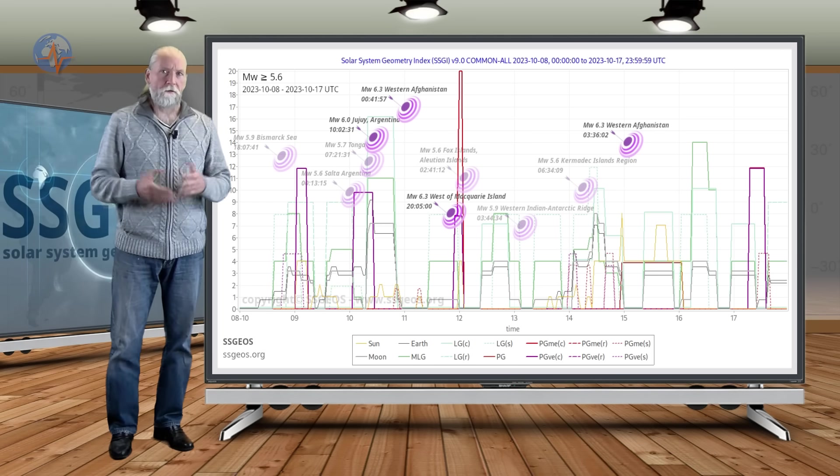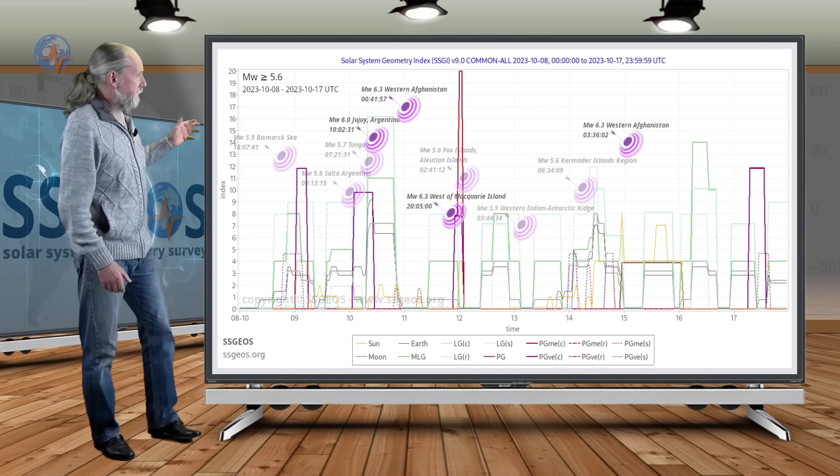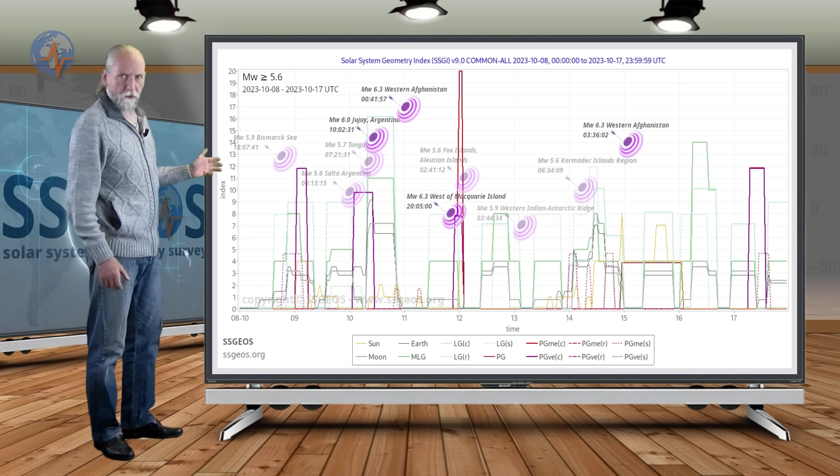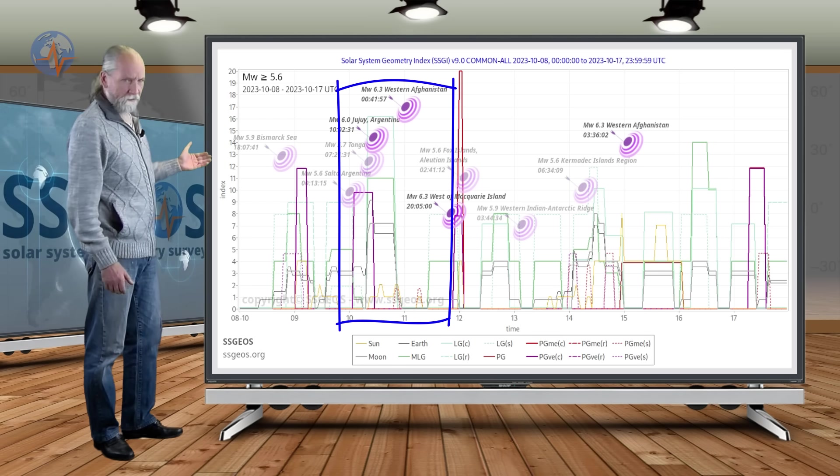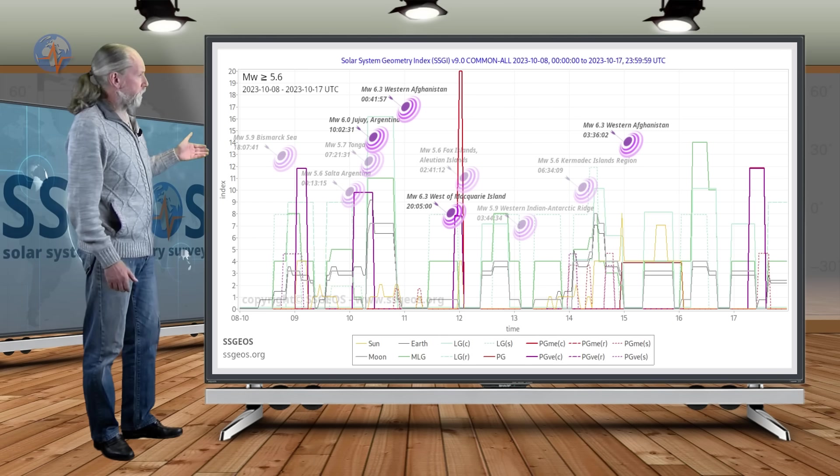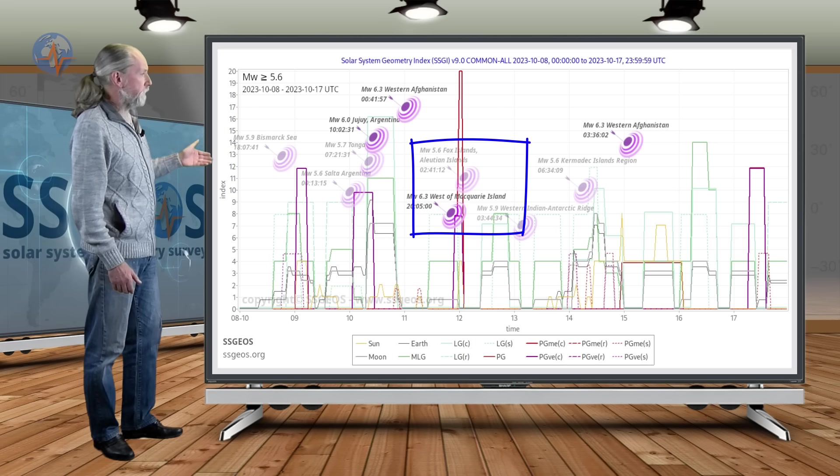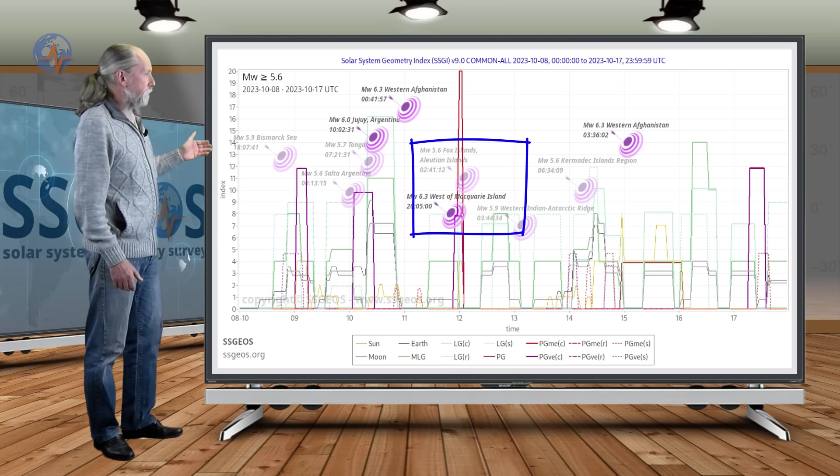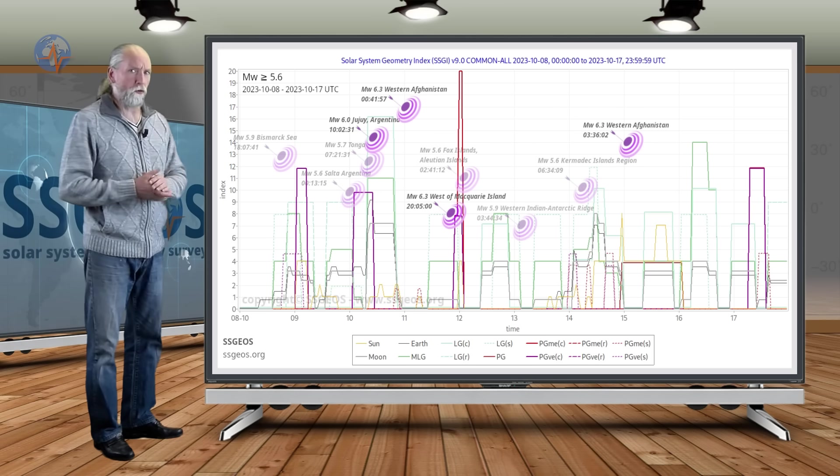If we look at the SEGI graph magnitude 5.6 and larger, we see most of the clustering actually occurred early on, on the 10th, with the planetary conjunctions and additional larger seismic activity west of Macquarie Island region 6.3 and also the Fox Islands, Aleutian Islands 5.6 at the time of the very tight convergence.